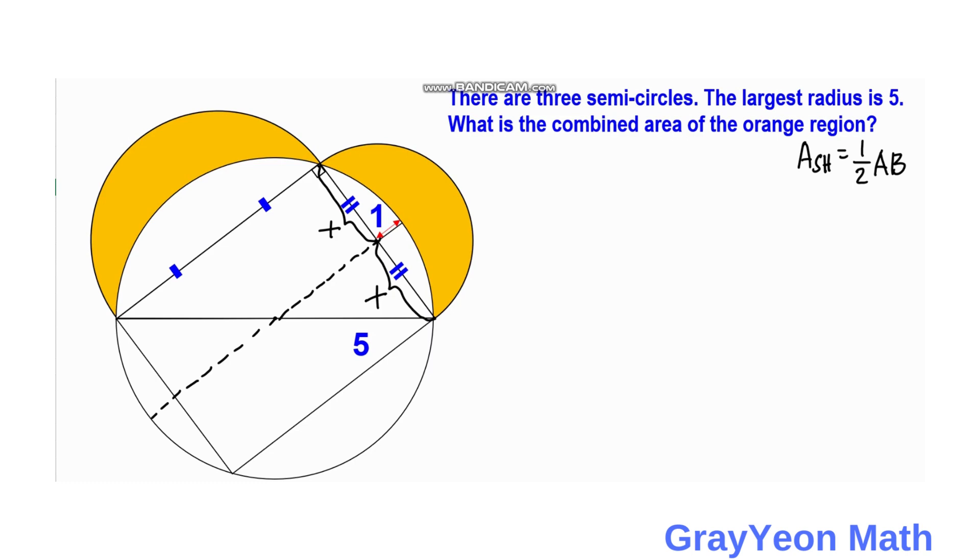So if the diameter of the circle is 5 times 2, which is 10, then since that whole length is 10, then this partial length is 9. Because 10 minus 1 is 9. So by intersecting Chords' theorem, we can make an equation that we'll say that x times x is equal to 9 times 1. So x squared is equal to 9, and x is equal to 3.